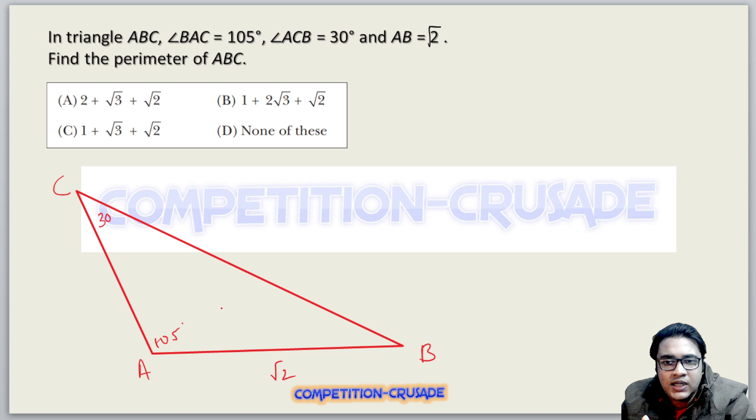Now, to find the perimeter, the first thing that came to my mind is: let's drop a perpendicular from vertex A to side BC. The moment I do this, if I name this point D, angle DAC becomes something interesting.